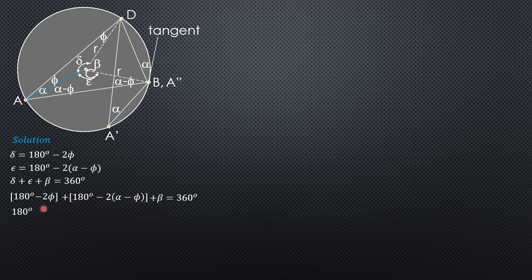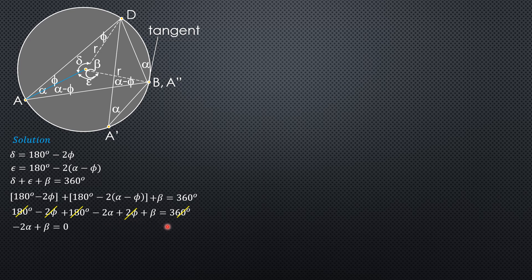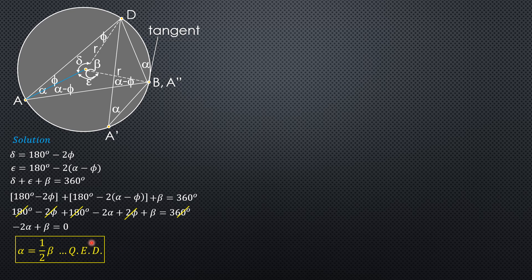Expanding: 180 minus 2p plus 180 minus 2 alpha plus 2p plus beta equals 360 degrees. So 180 plus 180 equals 360, canceling both sides. We can also cancel negative 2p and positive 2p. Therefore, we are left with negative 2 alpha plus beta equals 0, and obviously alpha equals one half of beta. This proves the theorem that the peripheral or inscribed angle alpha is one half the measure of its subtended arc.